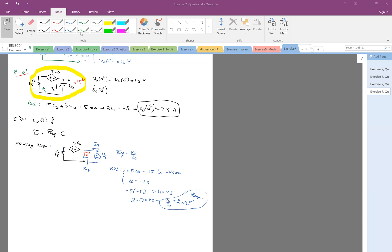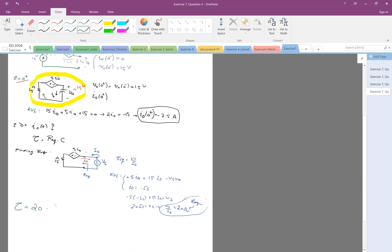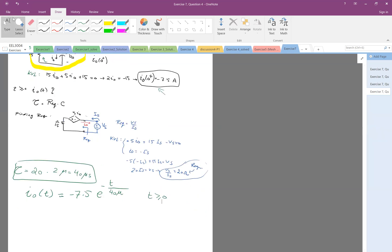Perfect. So now, tau equals R equivalent, 20, times capacitance, which is 2 microfarads, which is 40 microseconds. This is tau. So eventually, I0 at t equals the initial condition, this is minus 7.5 e to the minus t over tau. This is 40 microseconds. This is for t greater than 0. So this is basically what the problem wants us to find.